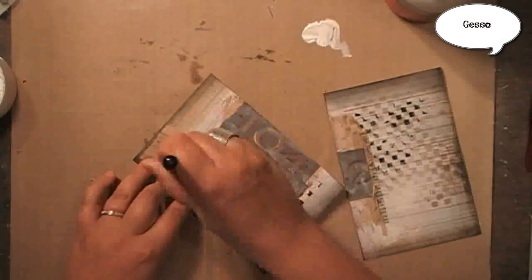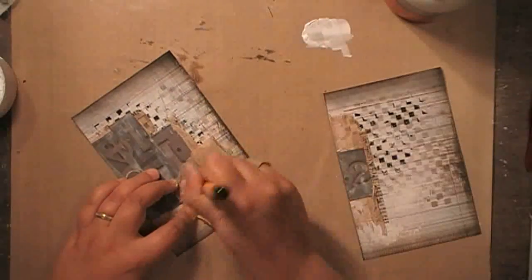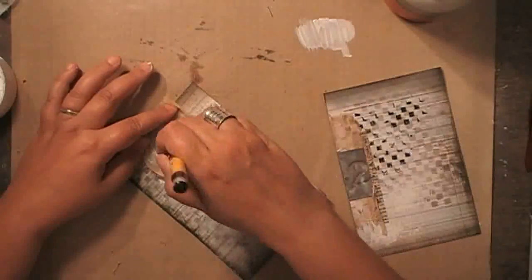Now I decided I needed a little bit more gesso on this side of my spread, so I'm going back in with a piece of cambric as a mask or stencil, and then applying gesso over it.